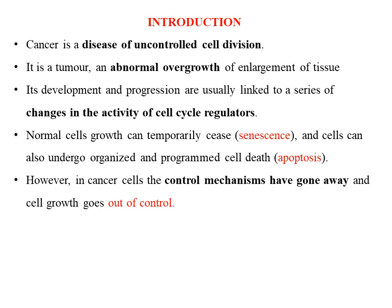This overgrowth is also called a tumor. An abnormal overgrowth causes the enlargement of the tissues. Its development and progression are usually linked to a series of changes in the activity of the cell cycle regulators. Cancer cells grow in an out-of-control manner, whereas normal cells can temporarily cease their growth by means of senescence, that is the aging process.